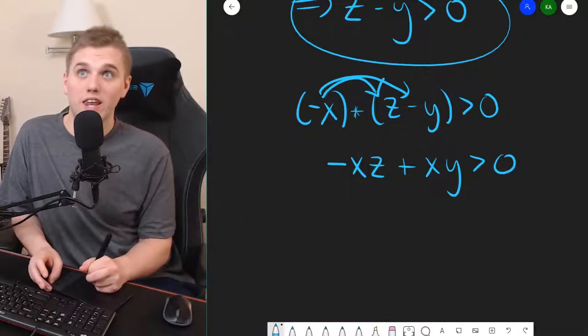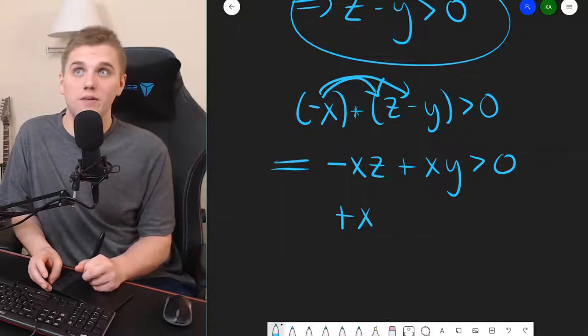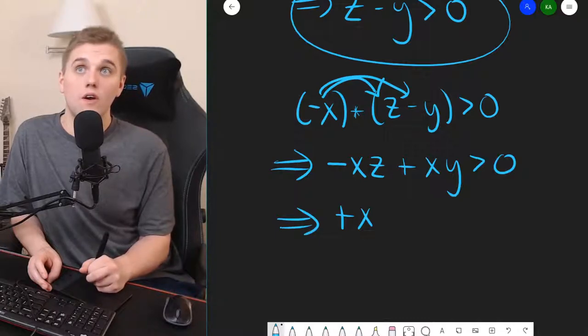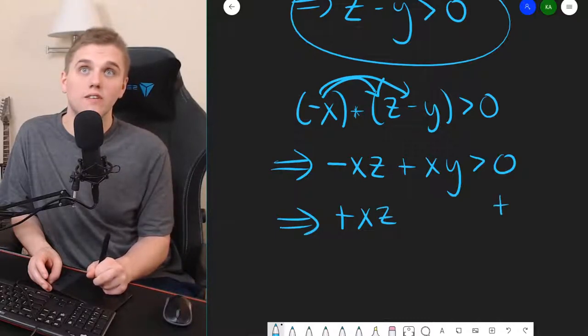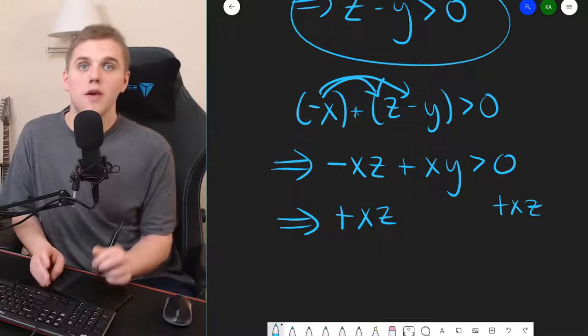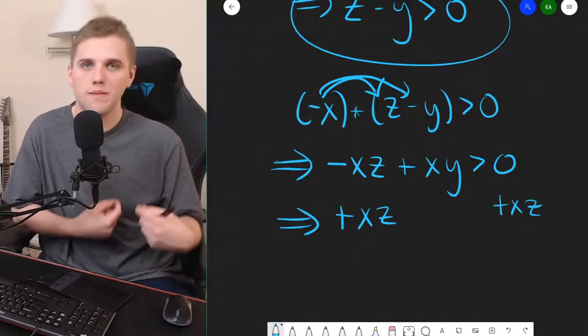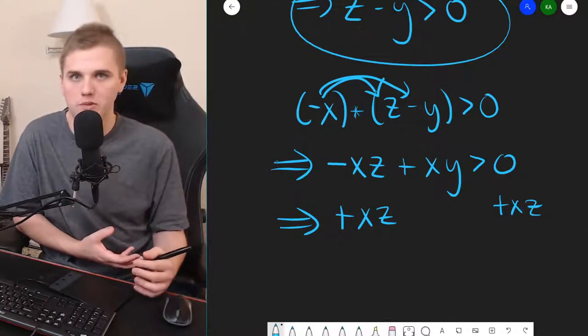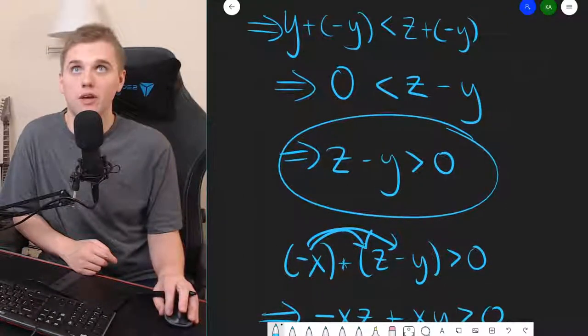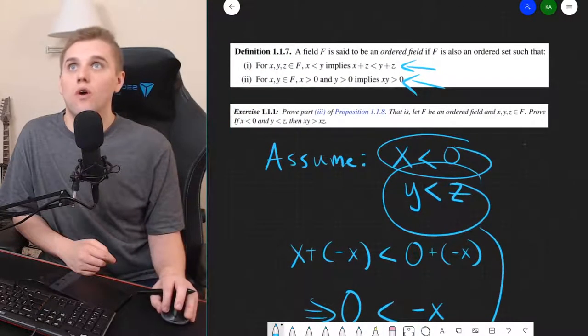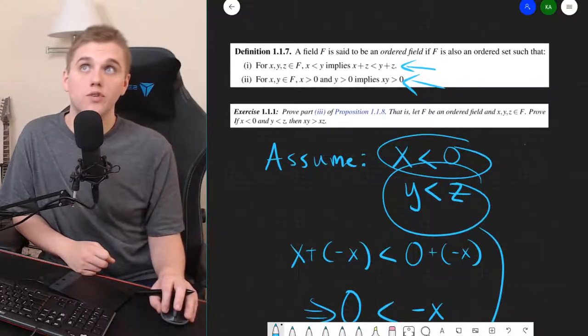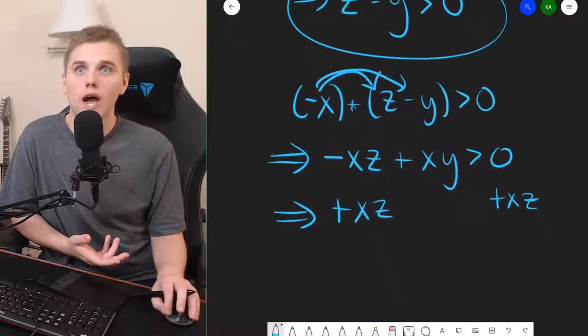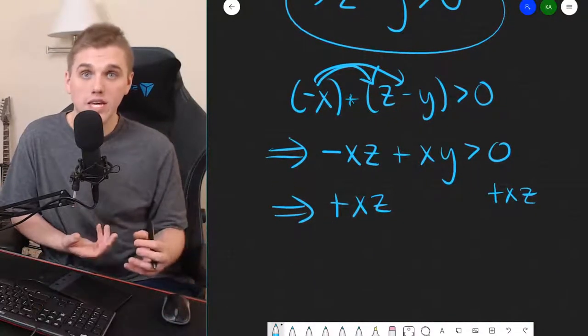Now, we can add, and let me make my arrows here real quick. We can add x times z to both sides, but before we do that, we need to make sure that x times z is in the field f. We can't just add whatever we want to both sides of inequality. According to the first property of an ordered field, we have to ensure that z is also an element in f. z has to be in f. So, why is it that x times z is in f?